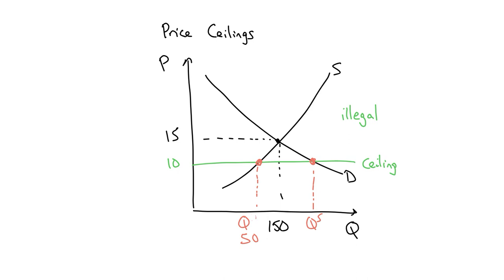This is the quantity supplied. It's coming off the supply curve. This is quantity demanded. It's coming off the demand curve. And that looks like 250.